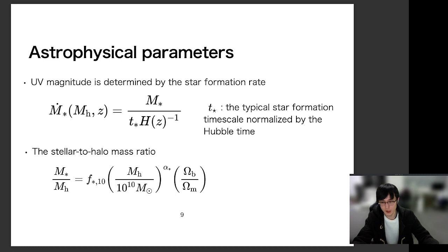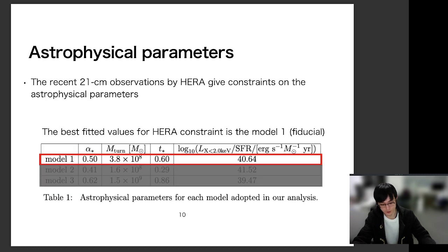And here the power law index alpha_star is a free parameter. But the effect of F_star on the global signal degenerates with T_star. So in this work, we do not consider the uncertainty of F_star. And in this work, we consider different values for these astrophysical parameters. So alpha_star, M_TAN, and T_star are explained now. And so the final parameter LX is the efficiency of the X-ray heating.